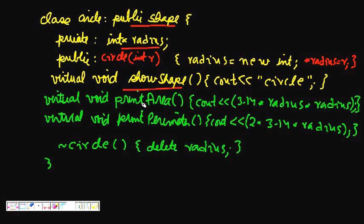Virtual void printArea cout 3.14 into radius into radius. Virtual void printPerimeter so I show the perimeter. These are all fine.